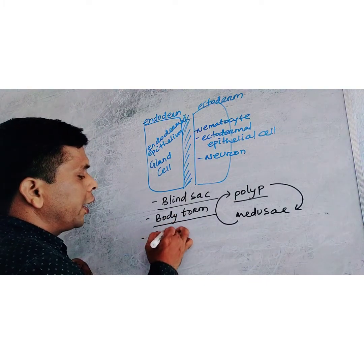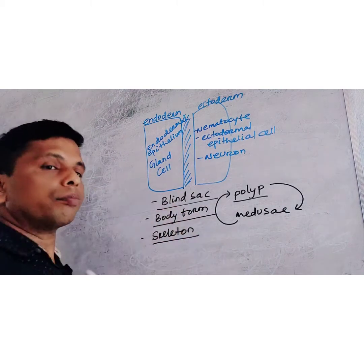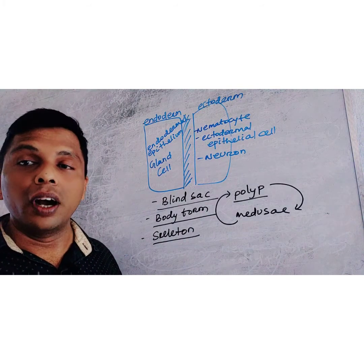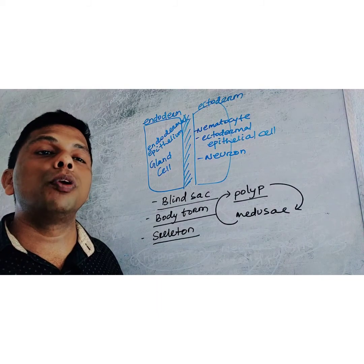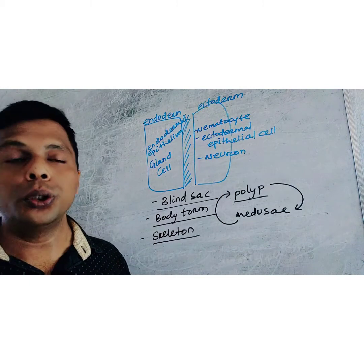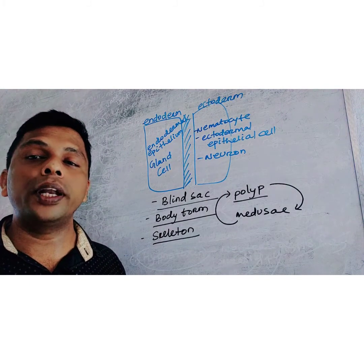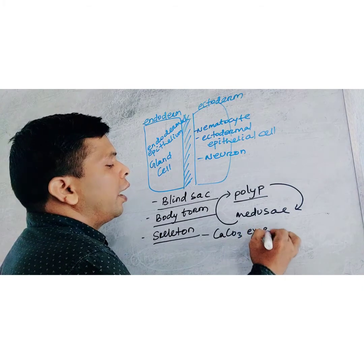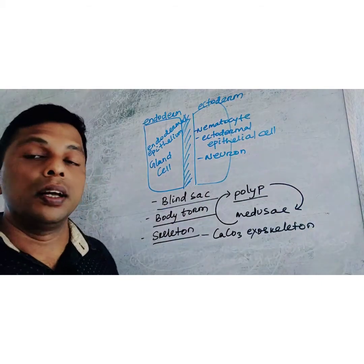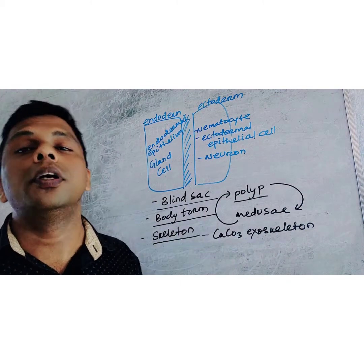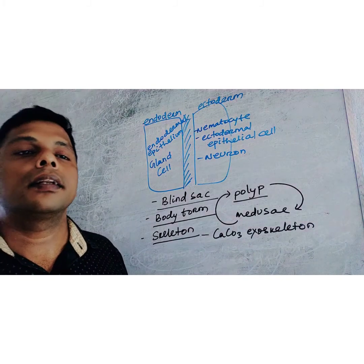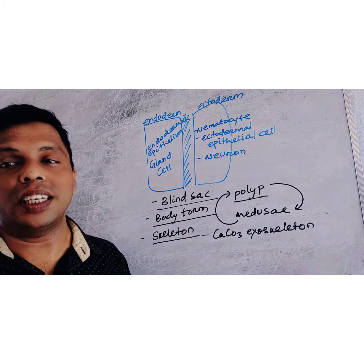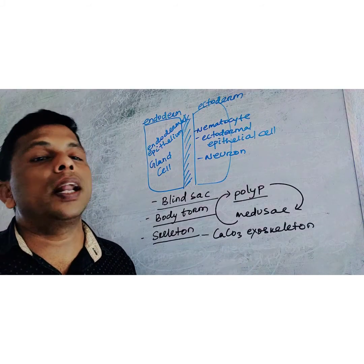Regarding the skeleton, a calcareous exoskeleton can be deposited. For example, coral belongs to this phylum and secretes calcium carbonate around its body, forming large coral islands. Regarding the digestive system, extracellular type of digestion takes place — extracellular digestion is seen for the first time in this phylum.